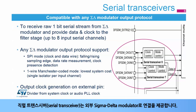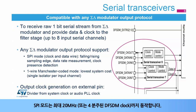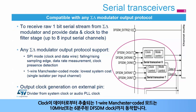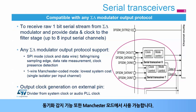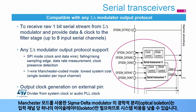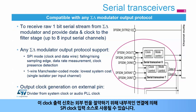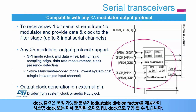Serial transceivers provide the connection to the external sigma-delta modulator. SPI mode works up to 20 MHz, or the DF-SDM clock divided by 4. There are configurable options including sampling edge selection, data rate measurement, and clock presence monitoring. One-wire Manchester-coded mode, where clock is recovered from the data, works up to 10 MHz, or DF-SDM clock divided by 6. A synchronization detection feature is also available in Manchester mode. Manchester mode offers the lowest system cost in case of optical isolation, as only one single isolator per input channel is necessary. The DF-SDM clock features a clock output signal to drive the sigma-delta modulator, with an adjustable division factor, driven either from the system clock or from the fine-tuned audio PLL clock.